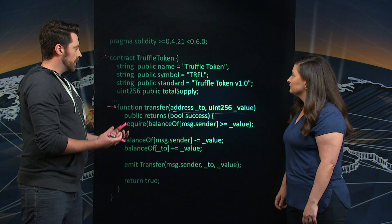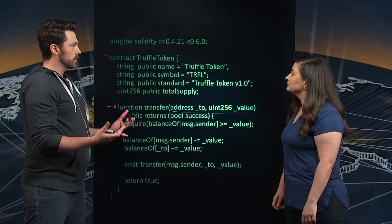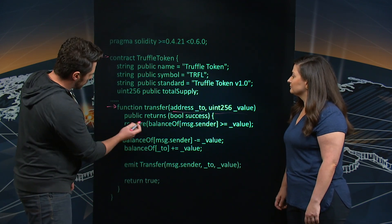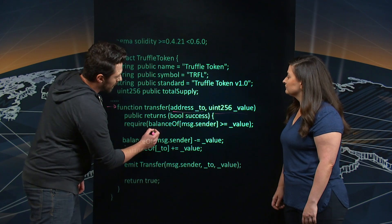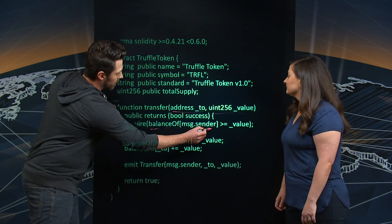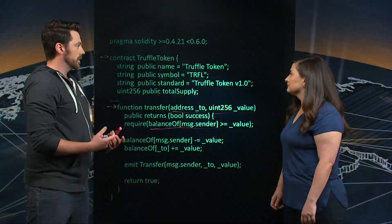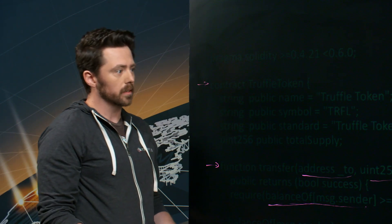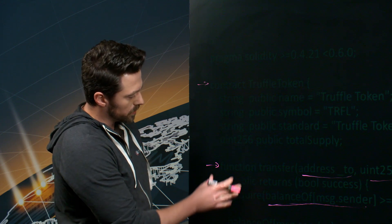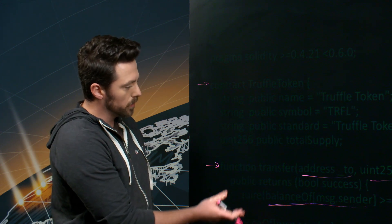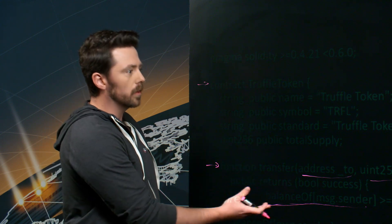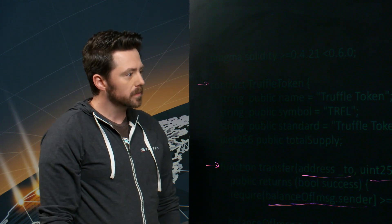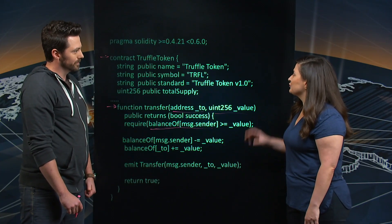There are issues when you write token contracts because there are many ways to game them. In the first line, we want to make sure I actually have the amount I want to send. For instance, if I want to send you 20,000 tokens and I don't have that much, the contract shouldn't let me do that. When writing secure contracts, you want to check all your cases ahead of time so bad actors can't do unexpected things.